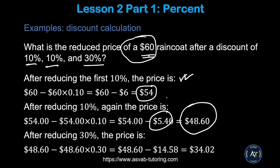With the third coupon, take 30 percent off $48.60. Thirty percent of $48.60 is $14.58; subtract that and you get $34.02. That is a very important problem type for the Officer Candidate test.